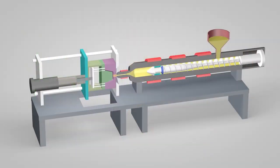An injection molding machine has three main parts: the injection unit, the mold, and the clamp.